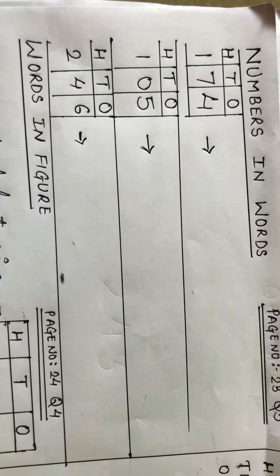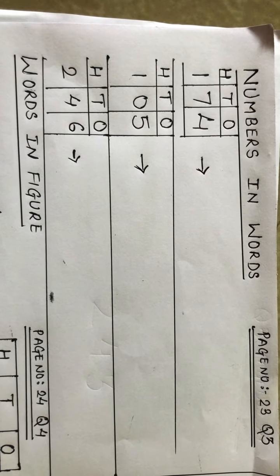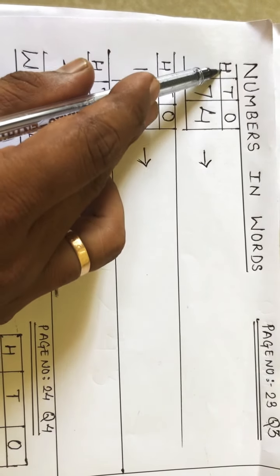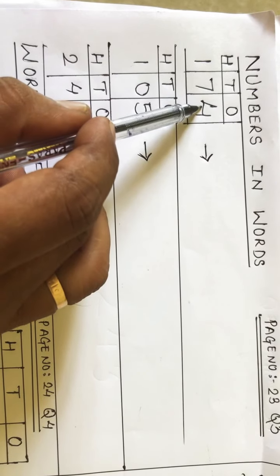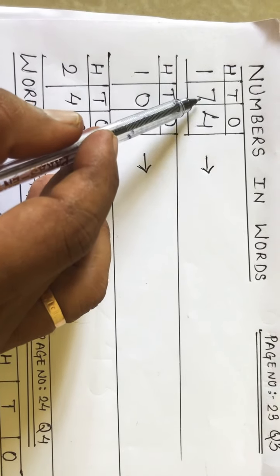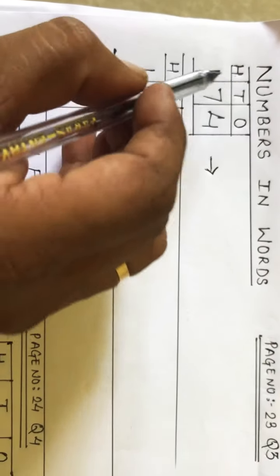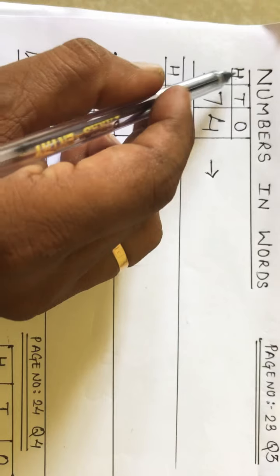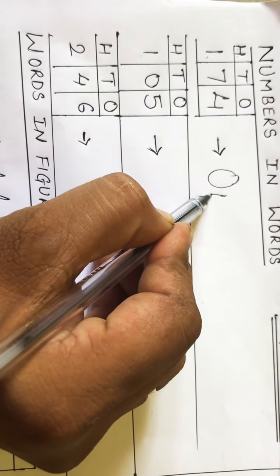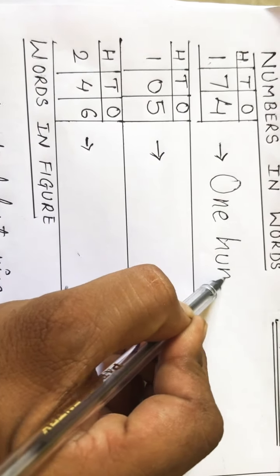Now see how to write numbers in words. First of all you should know the place value of each digit in a given number — aapko numbers mein digit ki place value pata honi chahiye. Here I have written a three-digit number: four is at ones place, seven is at tens place, and one is at hundreds place. Since one is at hundreds place, first we will write 'one hundred.'